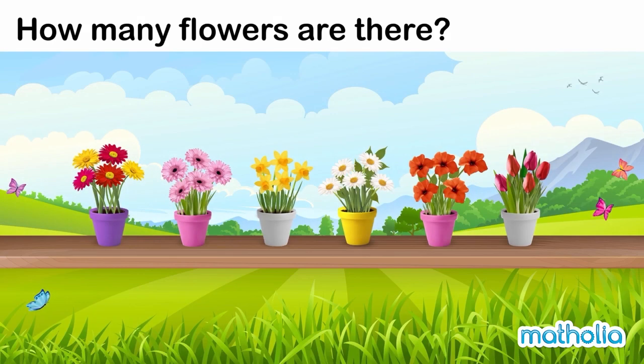How many flowers are there? Look at the flowers in the pots. In each pot there are five flowers. We can find the total number of flowers by counting in fives.